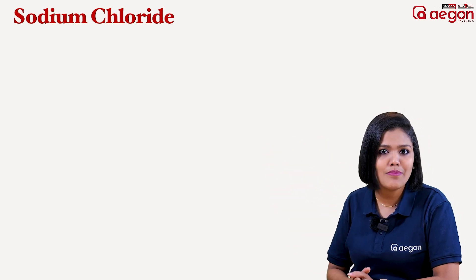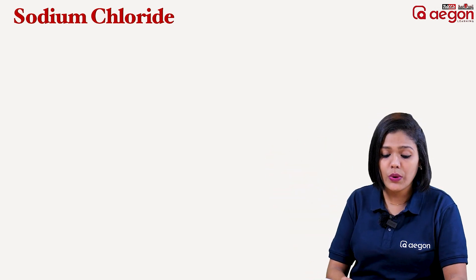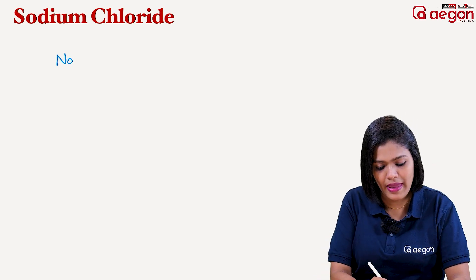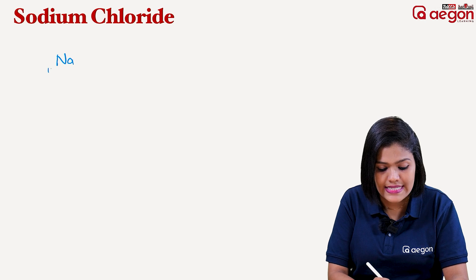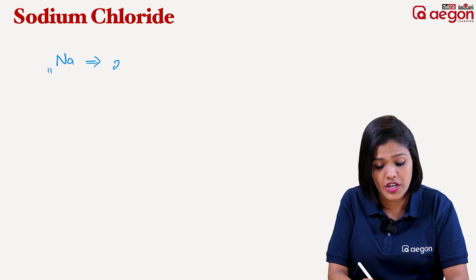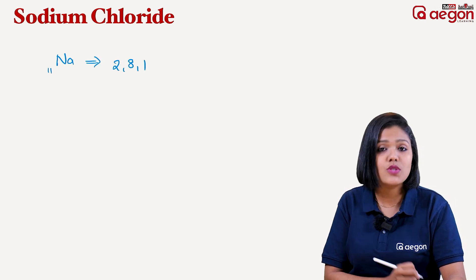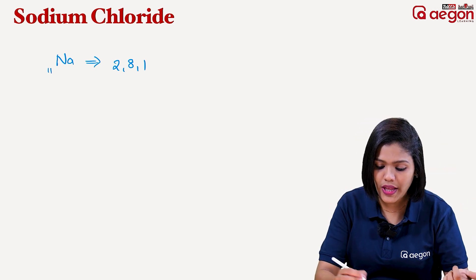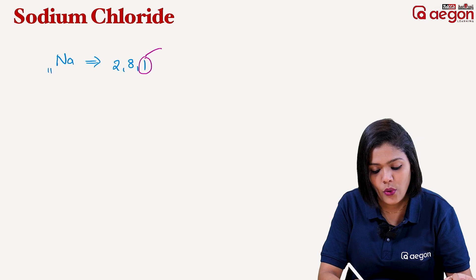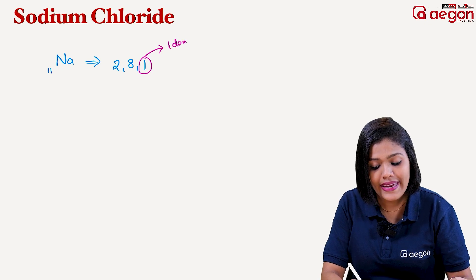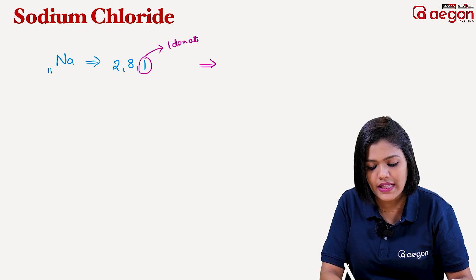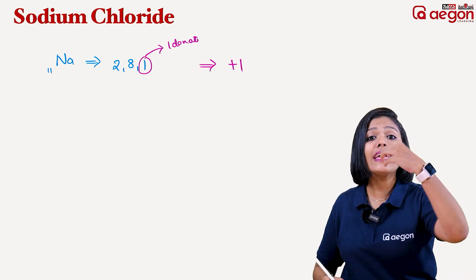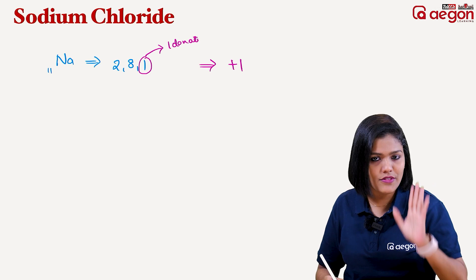First one is Sodium Chloride. Sodium — its atomic number is 11. Its electronic configuration is 2, 8, 1. Because it has one electron in the outermost shell, it will donate that electron. So sodium becomes a positive ion — it has a plus 1 charge.